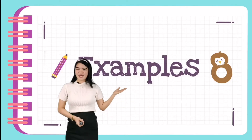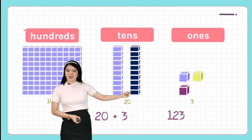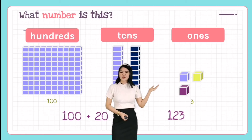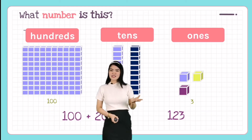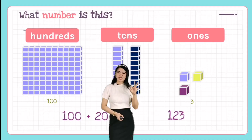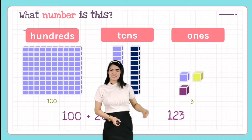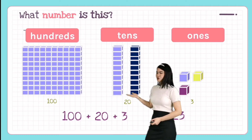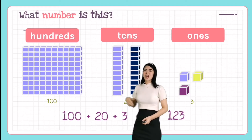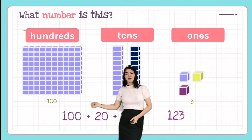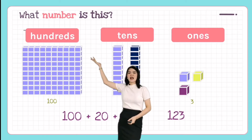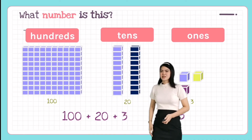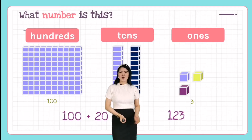Let's have some examples. For the ones place, how many ones do we have? Three — very good! Three is in the ones place. How about the tens place? We have two, so 20 is in the tens place. How about hundreds? We have one, so 100 is in the hundreds place. In expanded form we have 100 + 20 + 3, and in standard form we have 123.